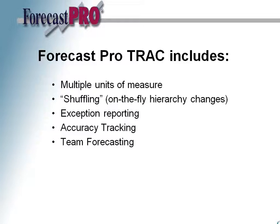Forecast Pro Track contains all the functionality found in Forecast Pro Unlimited, and adds to it multiple units of measure, shuffling — that is, the ability to make on-the-fly changes to your hierarchy — exception reporting, accuracy tracking, and team forecasting. If you need any of this functionality, then Forecast Pro Track is the product for you.